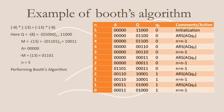What we do here is compare the values of Q0 and the least significant bit of Q. Since both values here are 0 and 0, we directly perform ARS and then move to the next cycle as shown.